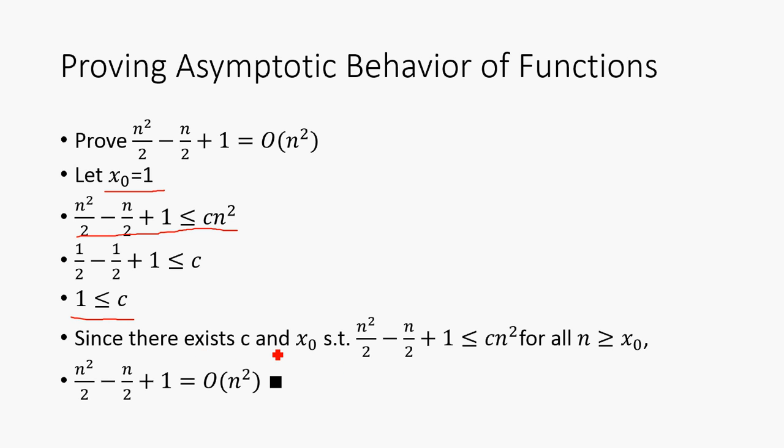So, since there exists c and x₀ such that this relationship holds true for all n greater than x₀, we say that this first function here is Big-O of n², thus completes the proof.